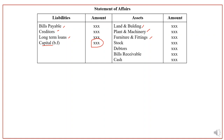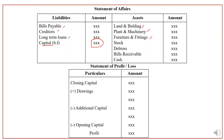After calculating opening and closing capital, we prepare a statement of profit or loss. We start with closing capital, then add drawings. From that, deduct additional capital and deduct the opening capital. The final answer is the profit or loss. If the answer is positive, it is profit; if negative, it is a loss to the business.